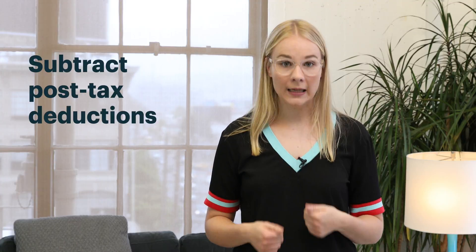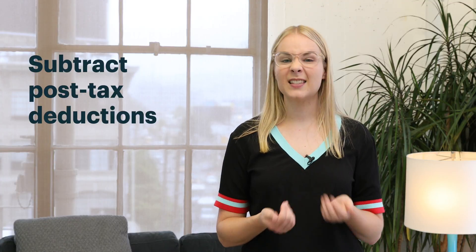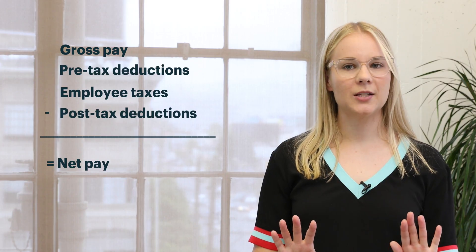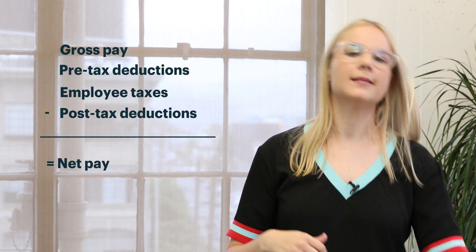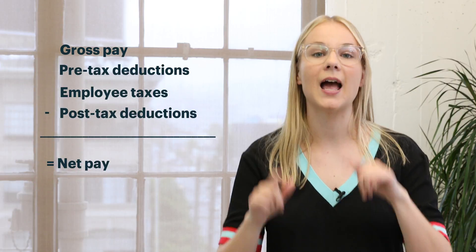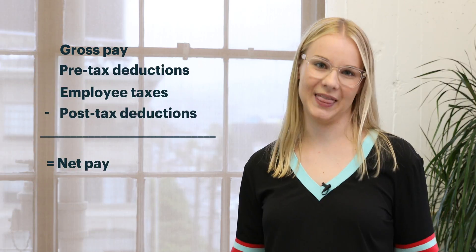Number four, post-tax deductions. This is going to be any garnishments or other money that has to come out after all the taxes are taken out. Next up, do the subtraction — just like we talked about, take that gross pay, take out those deductions and taxes, and you'll be left with the net pay.